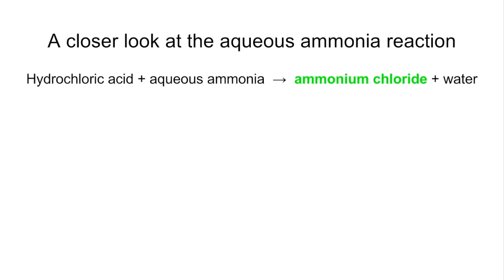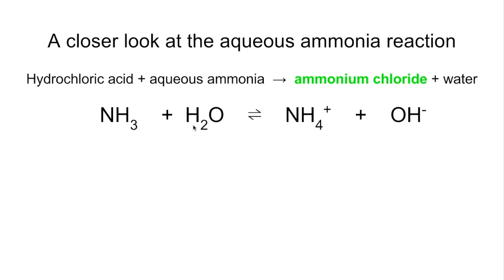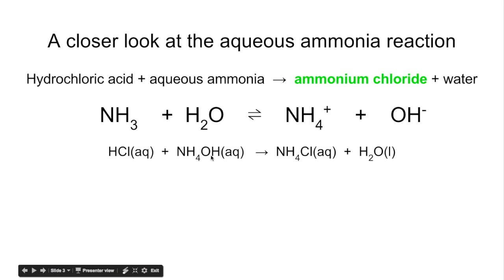If we look at the aqueous ammonia reaction now — again it's acid plus alkali, and remember aqueous ammonia is an alkali. Acid plus alkali makes salt and water, so in this case we're getting the salt ammonium chloride and water. When you put ammonia in water, remember ammonia is a base, it'll accept an H⁺ proton from the water and become the NH₄⁺ ion and the OH⁻ ion. So when you've got aqueous ammonia you've actually got ammonium hydroxide, and when you react HCl with ammonium hydroxide you get the salt ammonium chloride and H₂O.